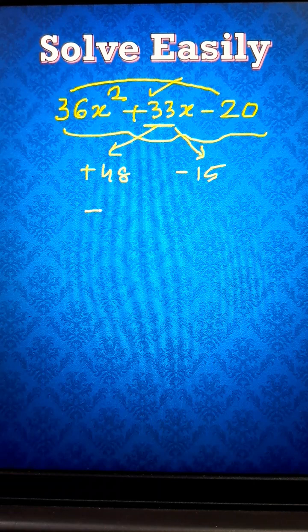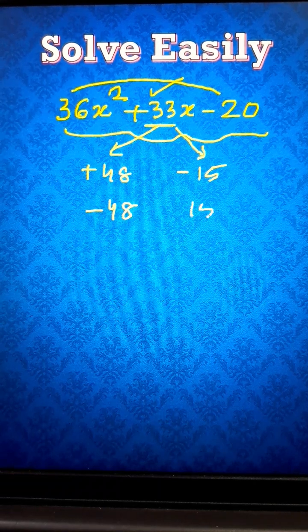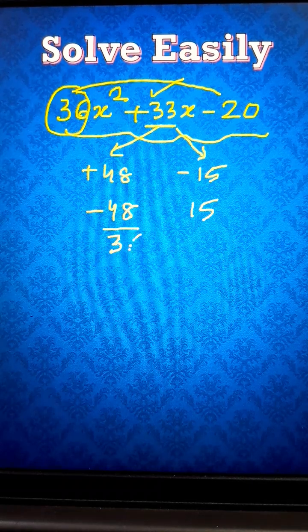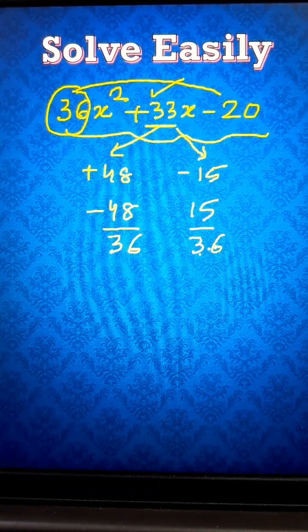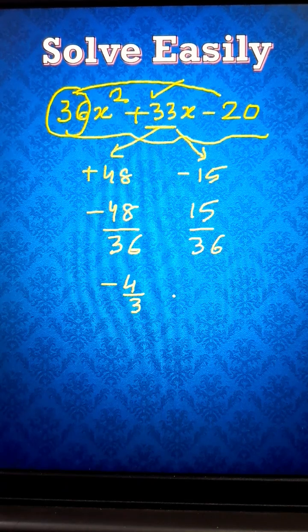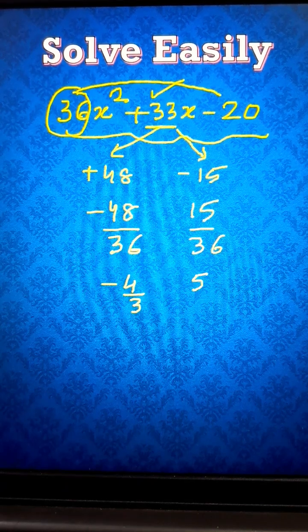What you do after this is change the sign of both the factors and divide it by the coefficient of x², which is 36. So you will get your answer: minus 4 upon 3, if you cancel the common factors, and 5 upon 12.